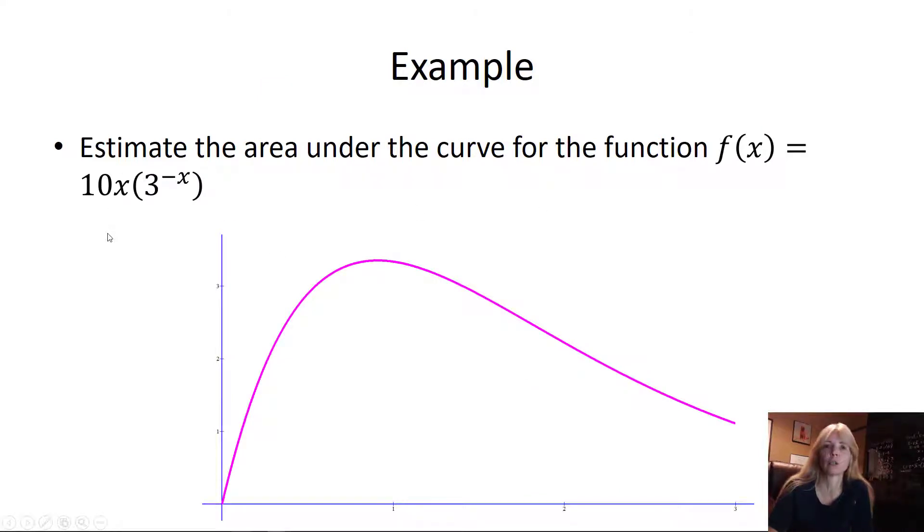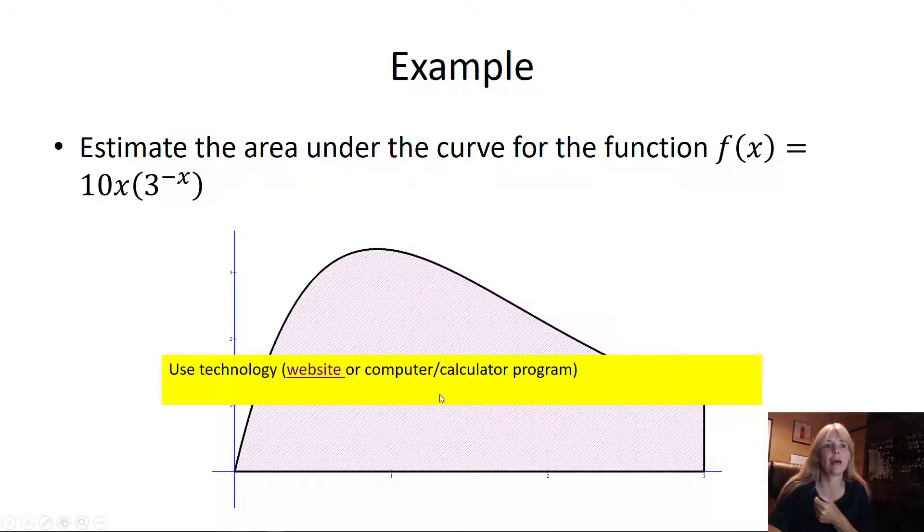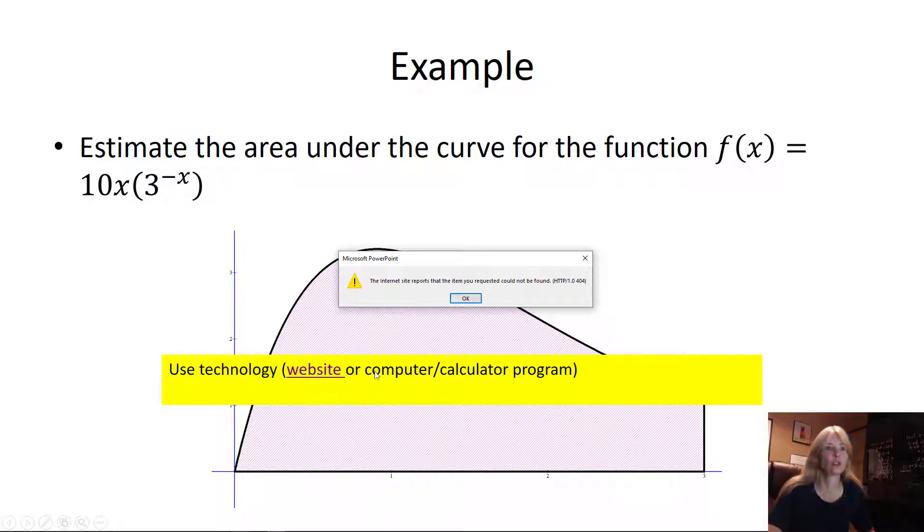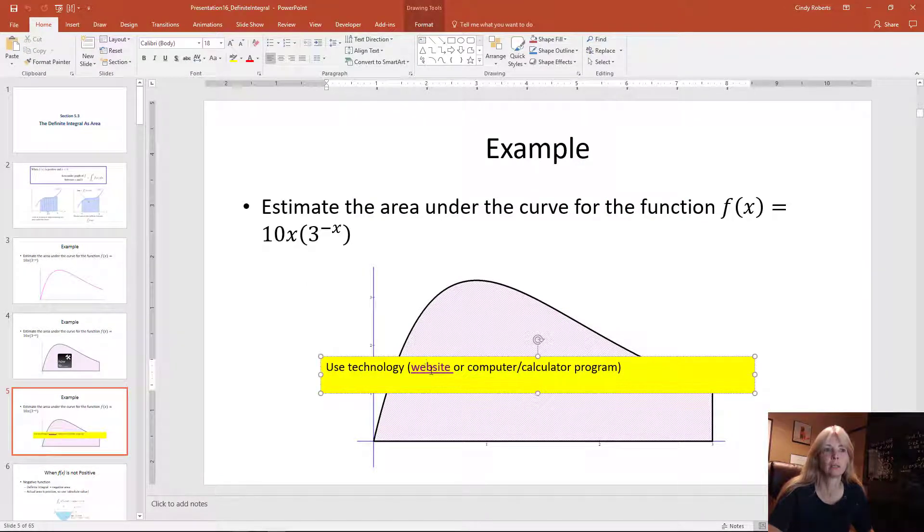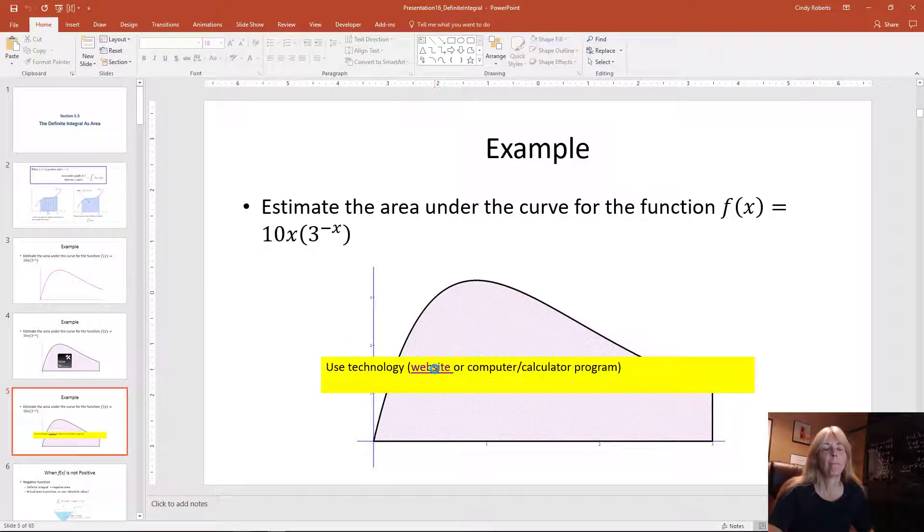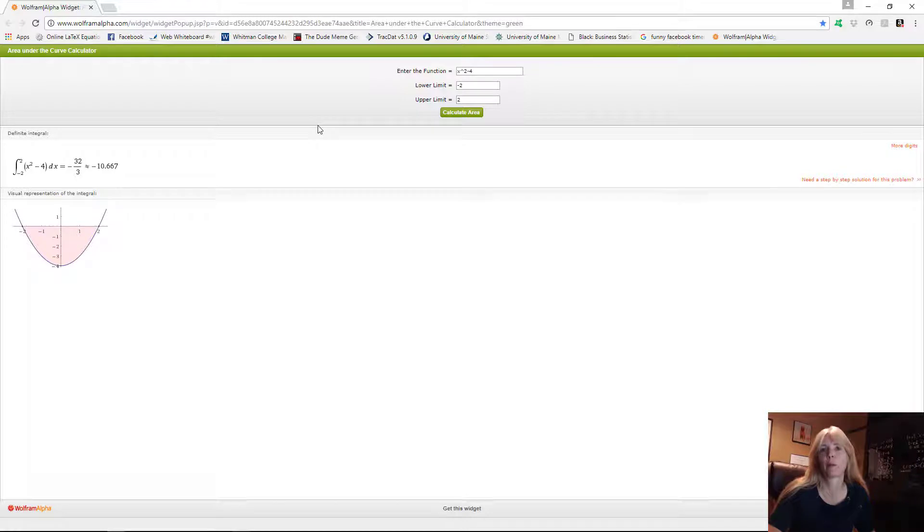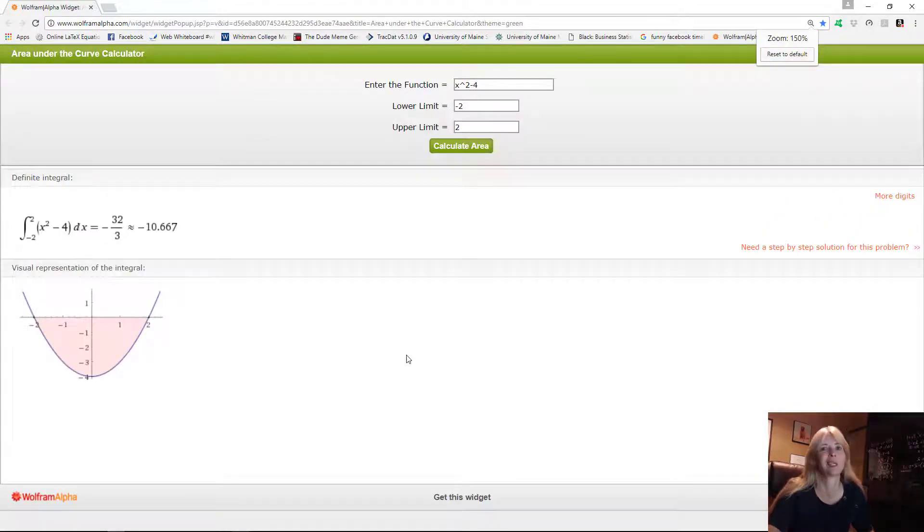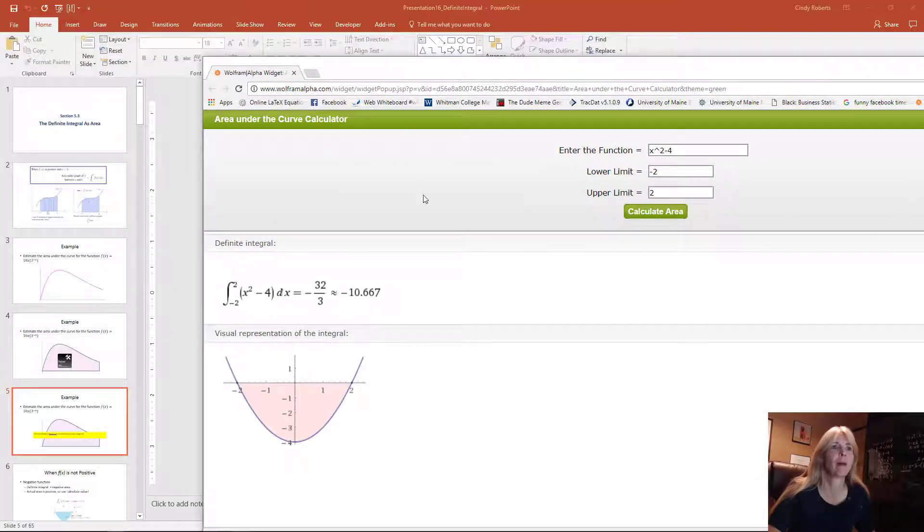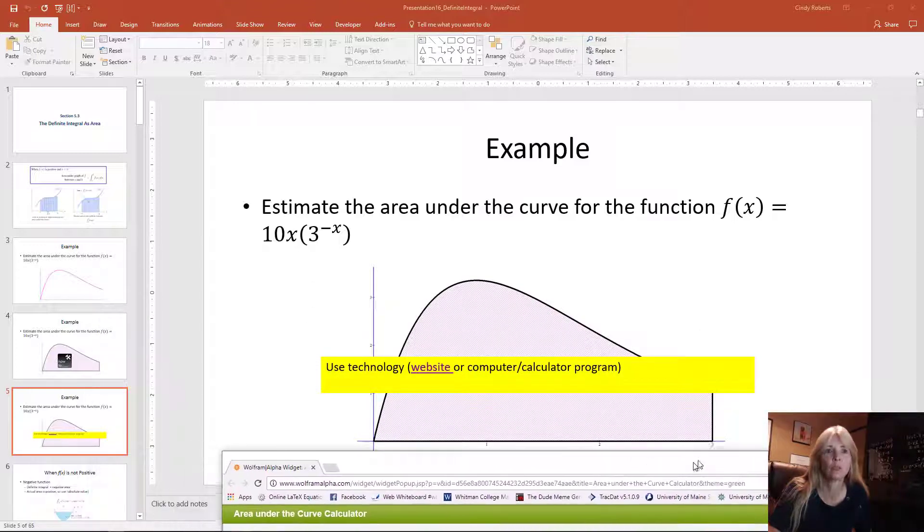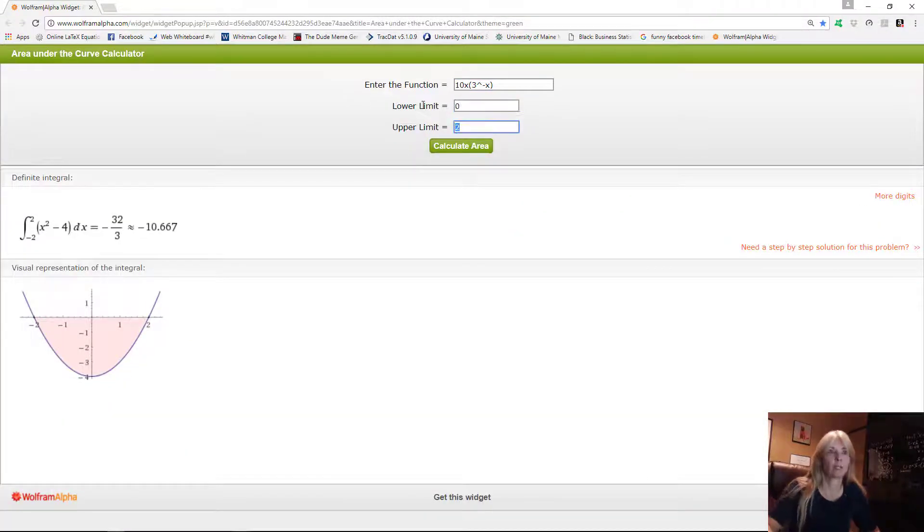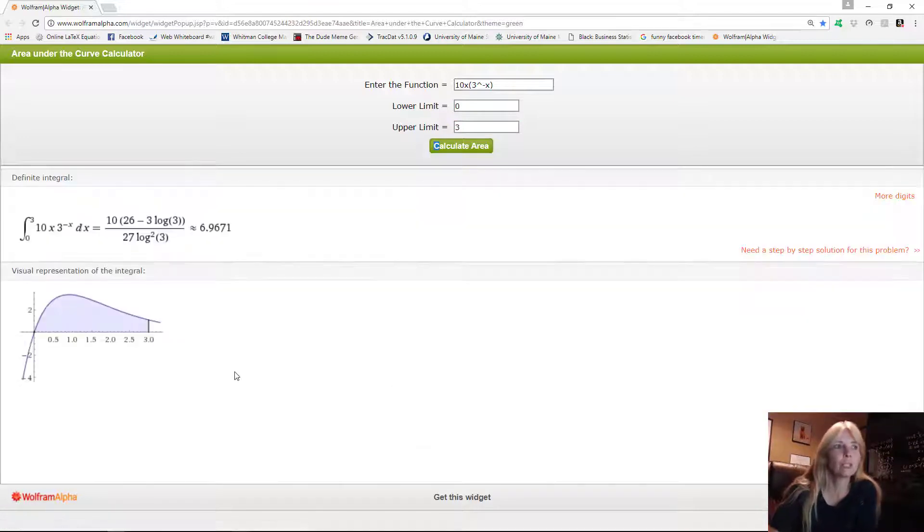So if I want to estimate the area underneath this curve, how would I do that? Well, again, in this section they have you do this with technology. You can use pretty much any technology that you want. You don't have to use what I have here, but I just found this one to be okay. And so this is a webpage, Wolfram Alpha. Most of you know very well about it, right? You think us teachers don't know about it. And so what I'm going to do is I'm going to enter my function, which is 10x times 3 to the negative x. And I can see on my graph I'm going from 0 to 3.